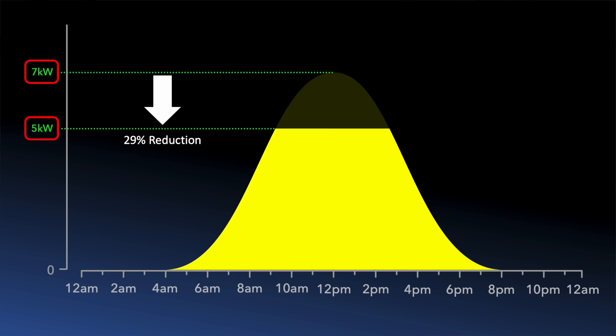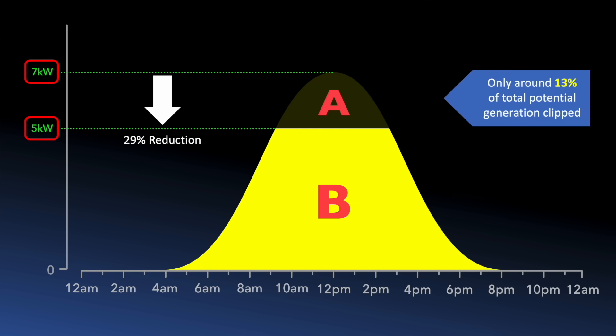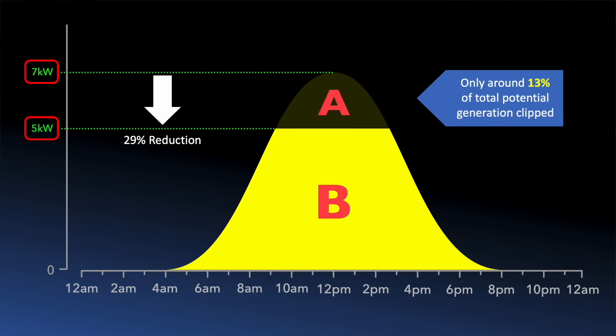That sounds like quite a hit, but we should instead be comparing energy generation across the entire day, which means we need to compare the area of clipped generation A with the total potential energy generation A and B. And in our example, when we calculate that, only around 13% of the total potential generation is clipped.